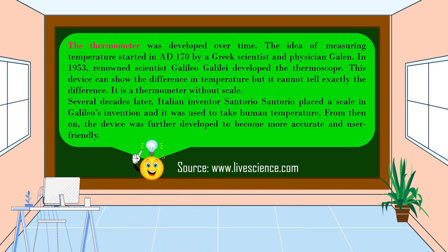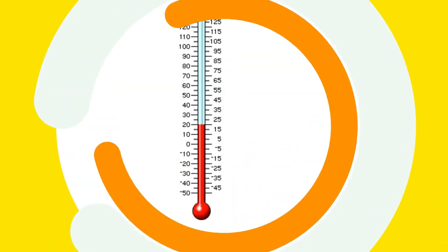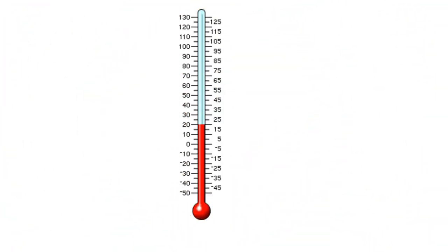Source: www.livescience.com. This is a mercury thermometer. This thermometer has two important elements: the scale and the temperature sensor. The temperature sensor is the bulb.